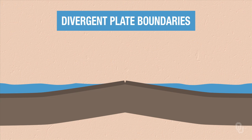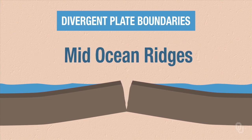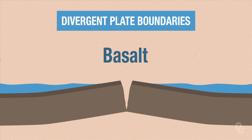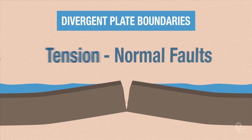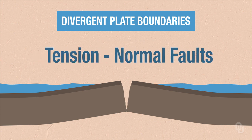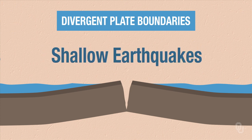First, divergent plate boundaries. Remember what happens here. The plates spread apart at the mid-ocean ridges, like the mid-Atlantic ridge. What forms there? Basalt. If you're pulling apart, you're going to get tension, so you get normal faults. And you generally have shallow earthquakes.